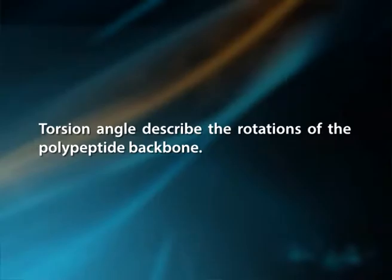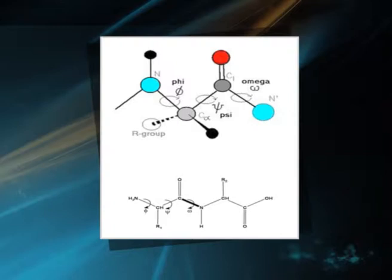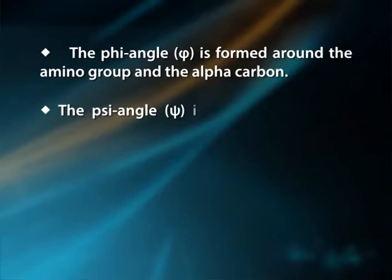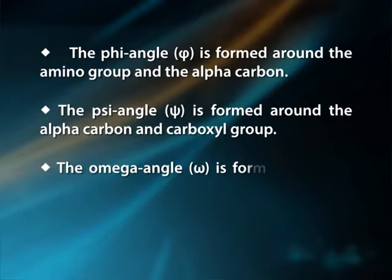Secondary structures also have torsion angles between the amino acids. Torsion angles describe the rotations of the polypeptide backbone. They are of three types: the phi angle, the psi angle, and the omega angle. The phi angle is formed around the amino group and the alpha carbon. The psi angle is formed around the alpha carbon and the carboxyl group. The omega angle is formed between two amino acids — it is the rotation of the peptide bond between the carboxyl group and amino group. The torsion angles of a protein structure are studied using the Ramachandran plot, which provides an overview of allowed and disallowed regions of torsion, and serves as an important factor in the assessment of the quality of protein three-dimensional structures.